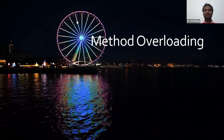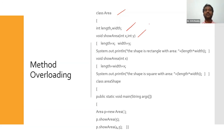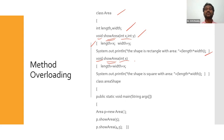Let us understand with a small program. We have a class 'Area' with variables length and width. There is a method called 'showArea' with two parameters — int x and int y. Then again, show area with the same method name but only one parameter — int x. So different number of arguments is supported. Show area will be considered as two different methods even though the method name is the same.